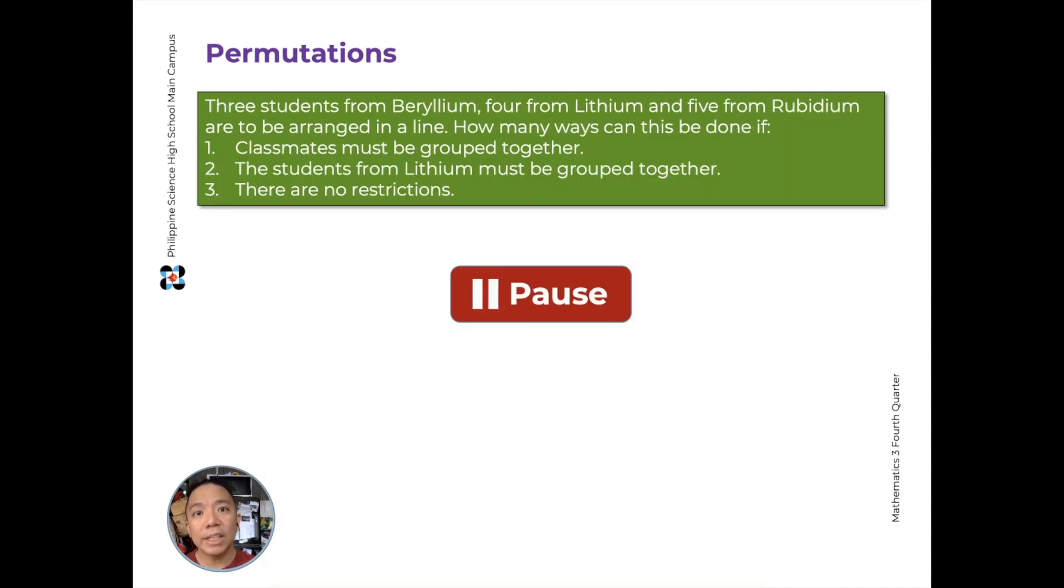For our next problem, we have 3 students from beryllium, 4 from lithium, and 5 from rubidium. And they need to be arranged in a line. Now we have 3 different scenarios. How many ways can this be done if scenario 1, the classmates must be grouped together? For the second case, only those from lithium are required to be adjacent. So there can be one person from beryllium, one from rubidium, then the whole group of lithium students, then the remaining beryllium and rubidium students, however they're arranged. And third, what if there are no restrictions? Pause and try to answer these 3 problems and let's compare our answers and solutions.